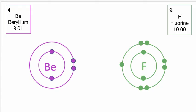Let's have a look at another example. Here we have a beryllium atom. Beryllium is number four on the periodic table. It has four electrons, and that means it has two electrons in its outer shell. Let's look at fluorine. Fluorine is number nine on our periodic table and has nine electrons with seven of those in its outer shell.